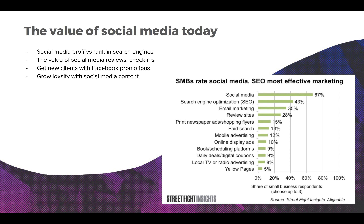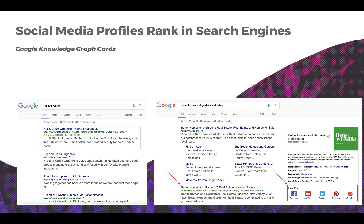Social media as a marketing channel has been proven to be the most effective one — 67% of small business owners agree. Your social profiles influence the content of your search results; in fact, social media profiles are often among the top results in search listings for brand names. Google Knowledge Graph cards on the right make your clients' search experience faster and smarter.